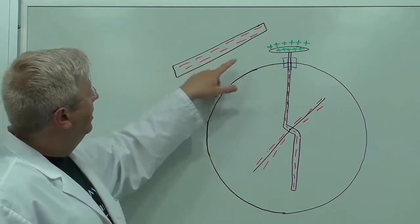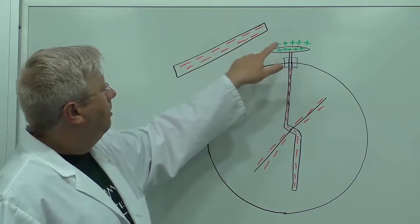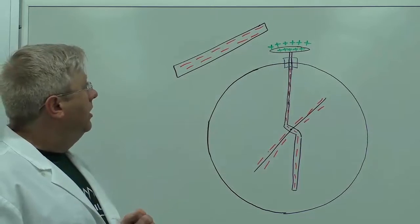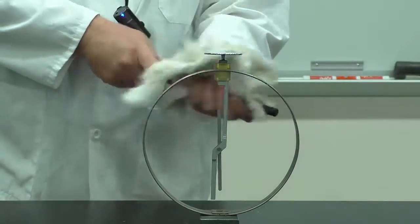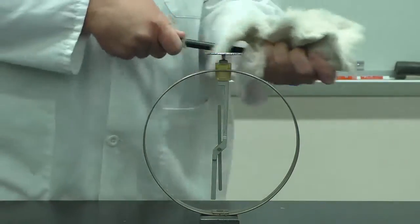And then the positive charges from the electroscope are all going to gather on the top plate there because they're attracted to the negative charges in the rod. So we're charging up the hard rubber rod with the fur that gives the hard rubber rod a net negative charge.